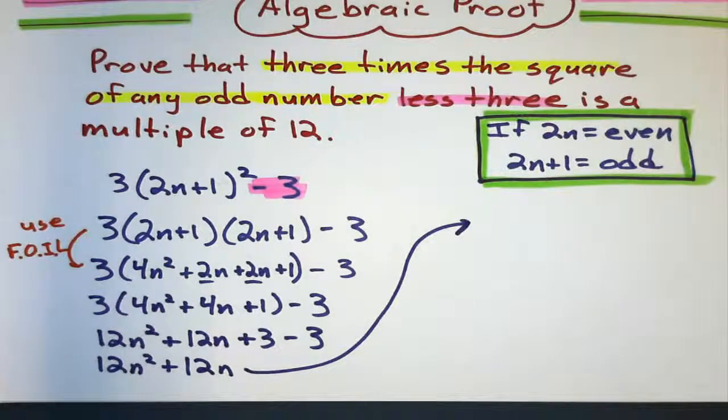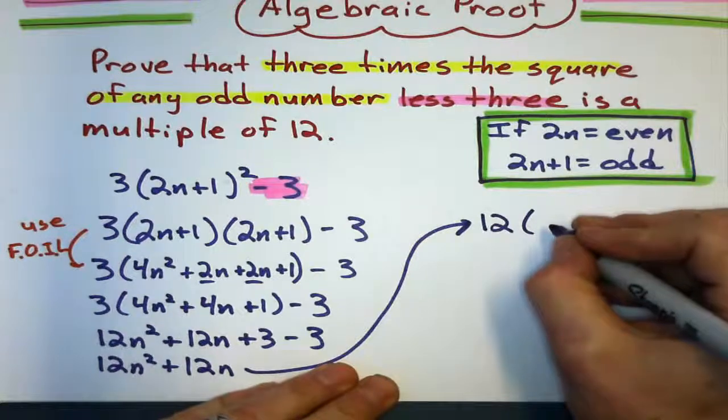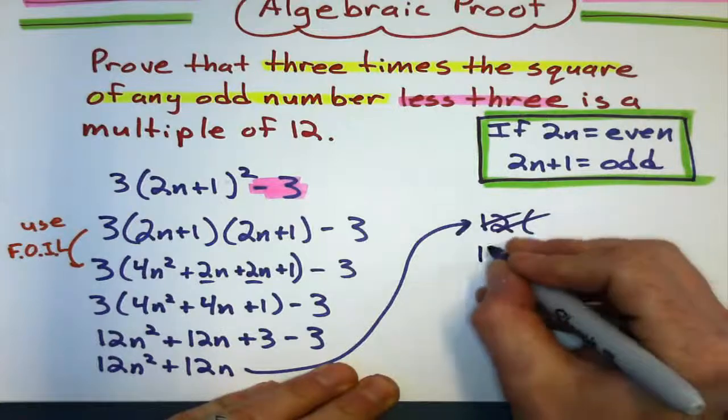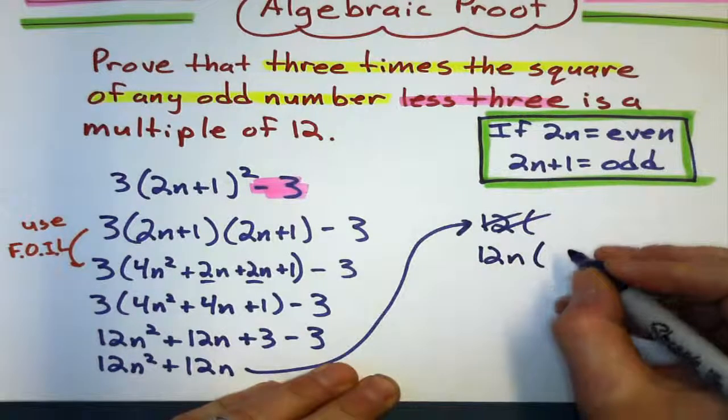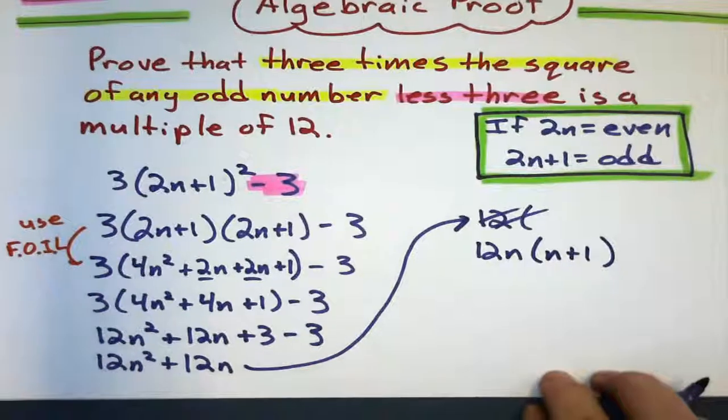And I get 12n squared plus 12n. And then I say, hey, this is looking pretty good, because if I factor out a 12, I'm left with, factor out a 12, 12n. Hey, 12n. And I get 12n plus 1.